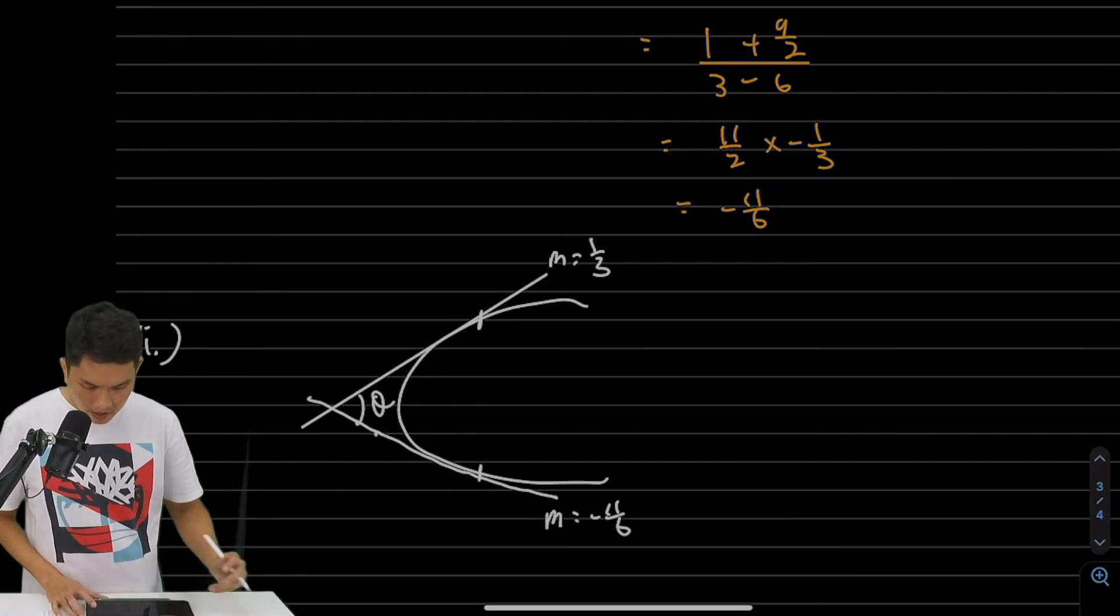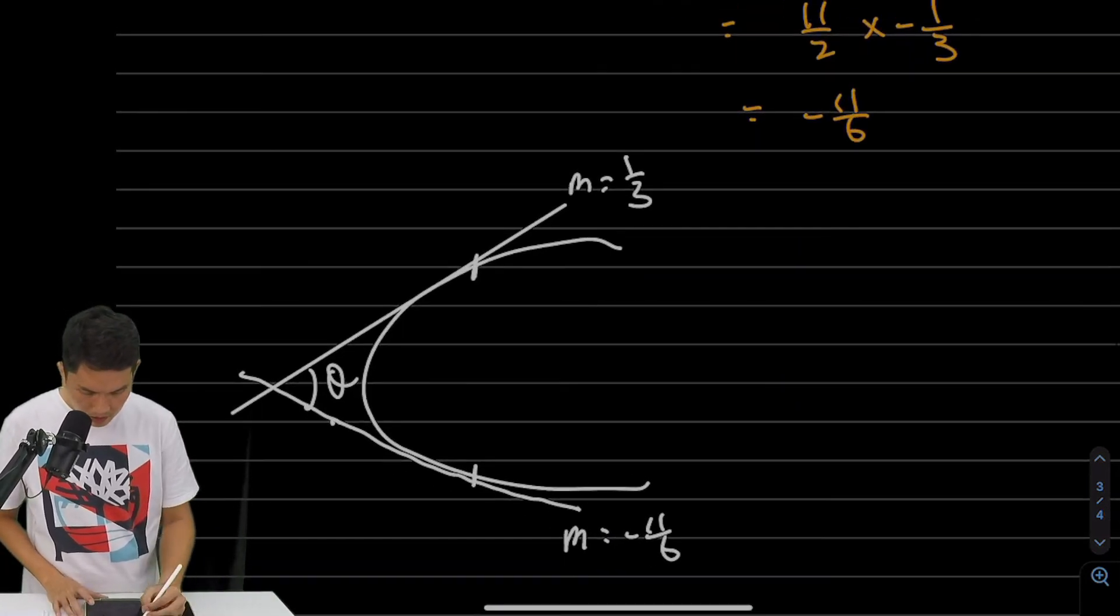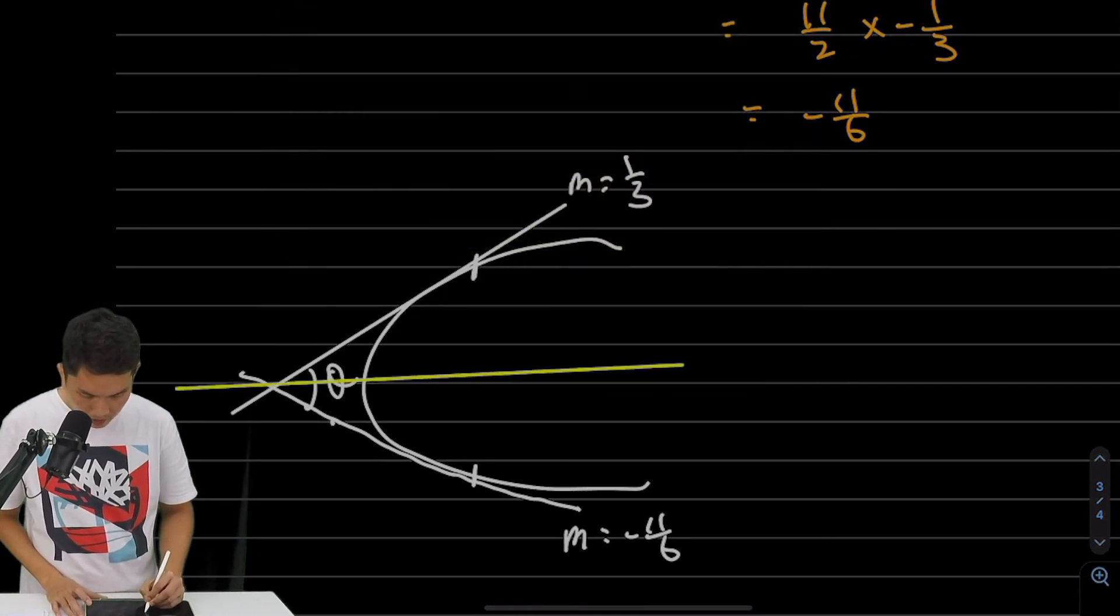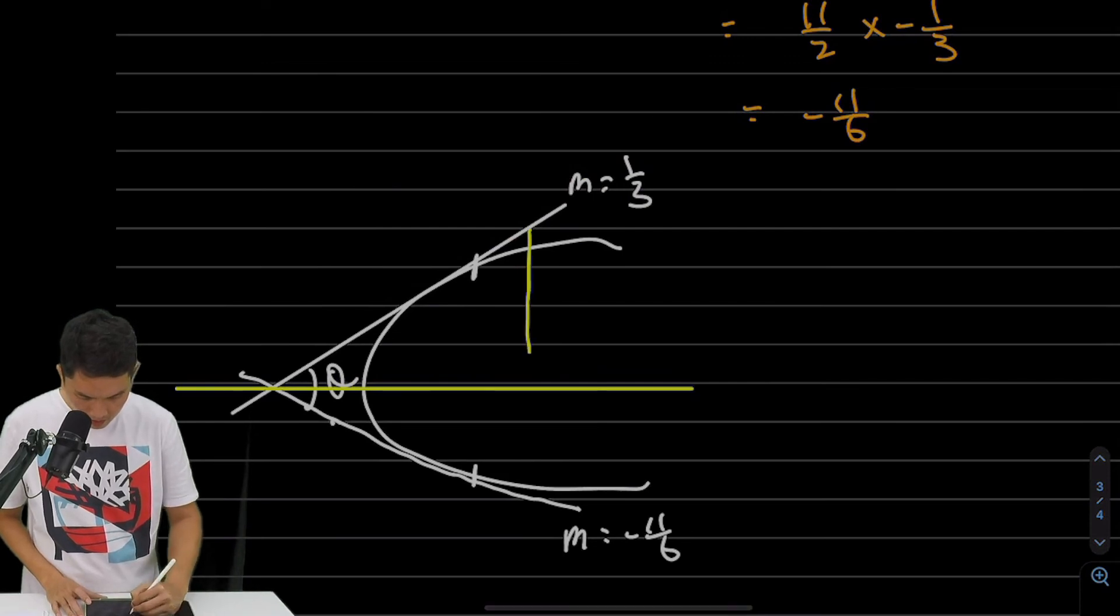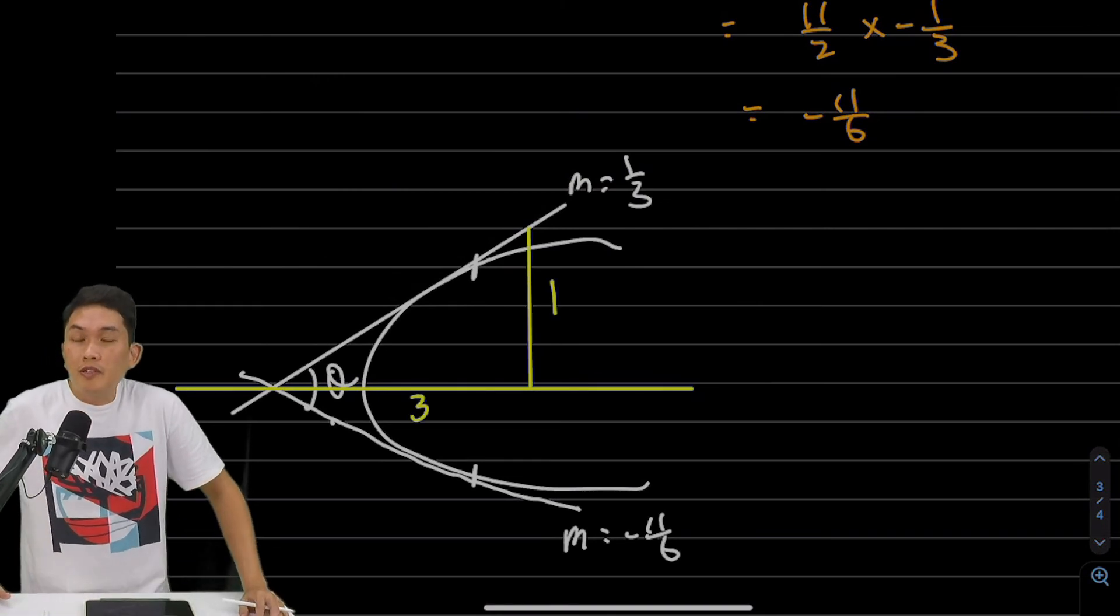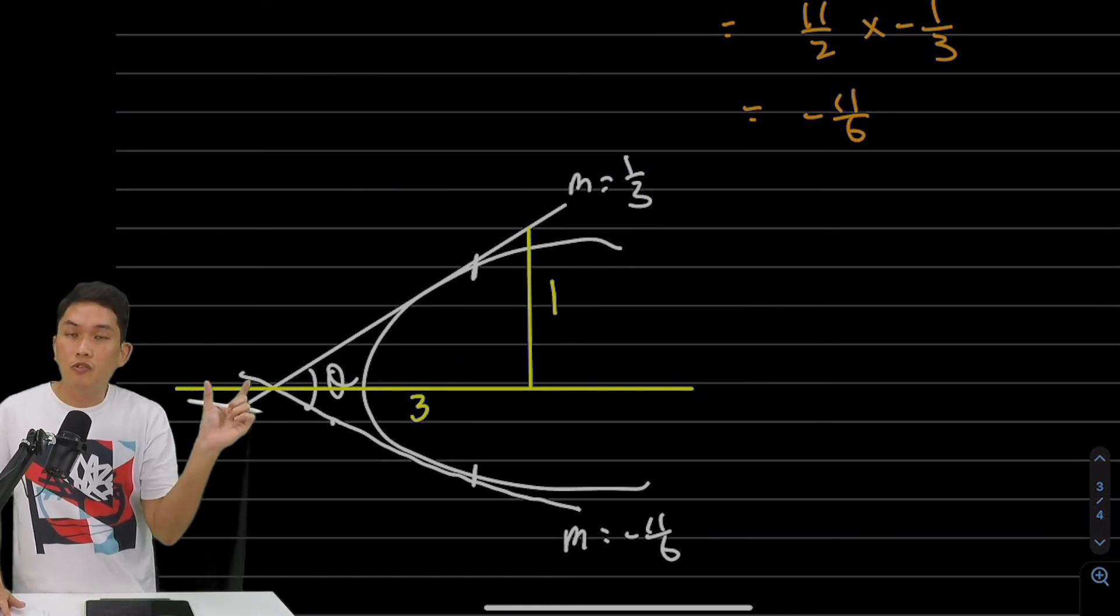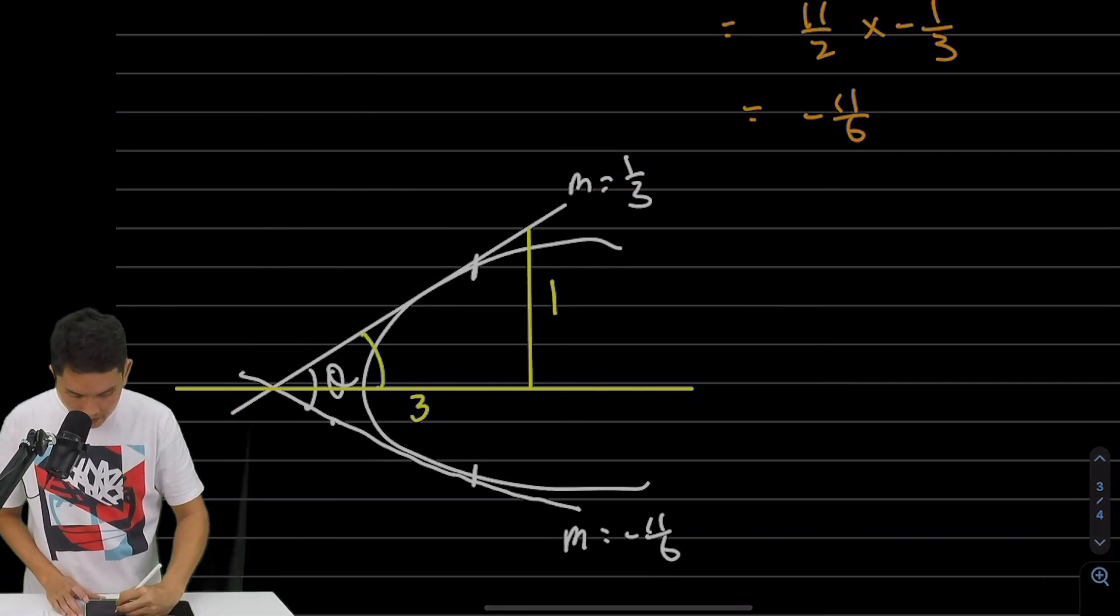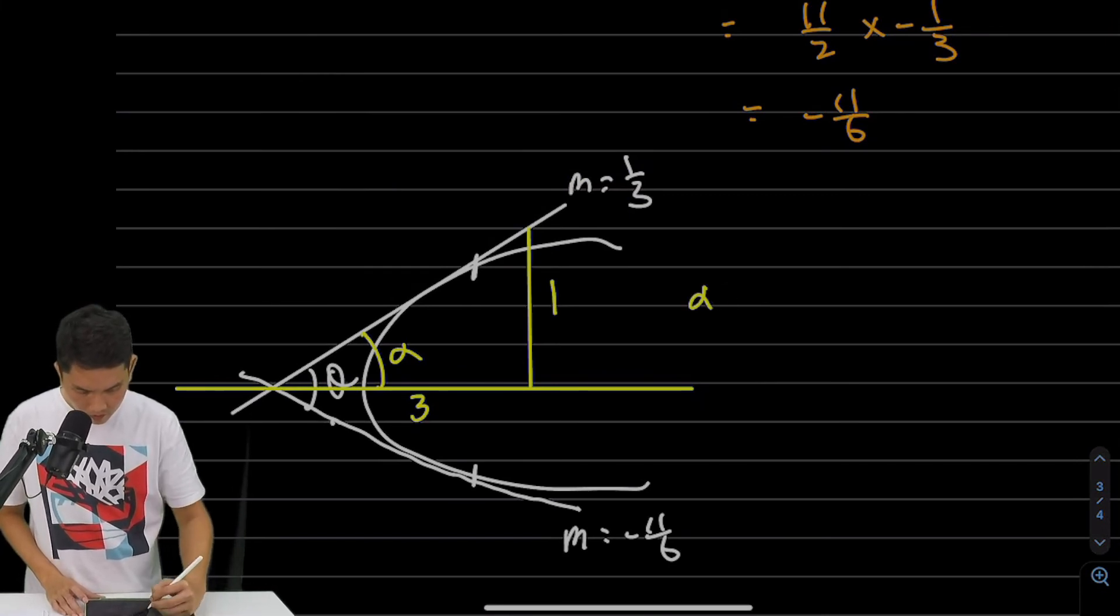Now one easy way to do this: since the gradient is 1/3, if I draw a horizontal line, I know the ratio is 1 to 3. Why? Because gradient is rise over run - how much the vertical height changed over how much the horizontal distance changed. That's 1 to 3. So I'll call this angle alpha.